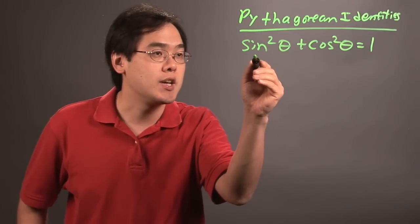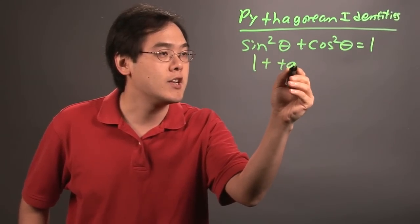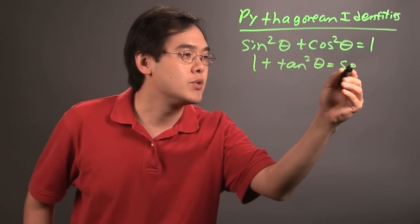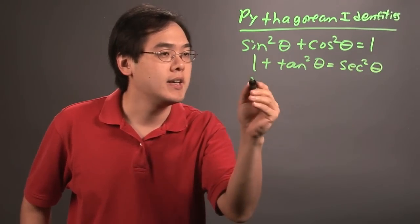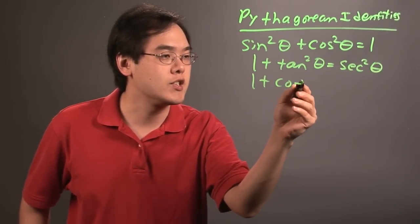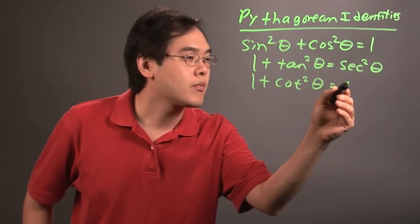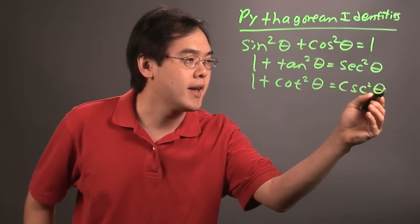There are a couple of other ones such as 1 plus tangent squared theta equals secant squared theta, as well as 1 plus cotangent squared theta equals cosecant squared theta.